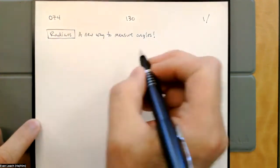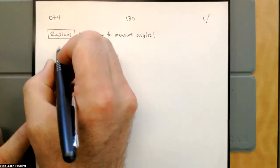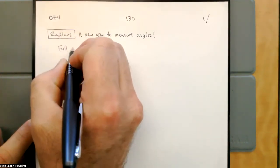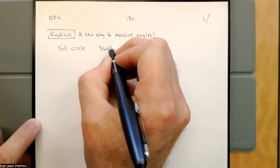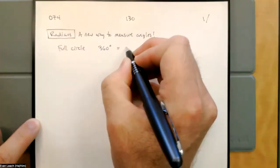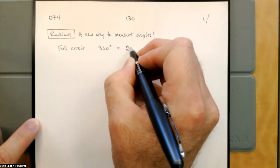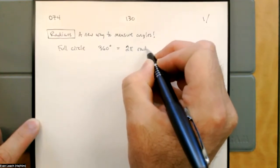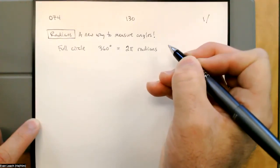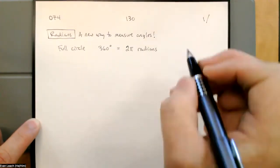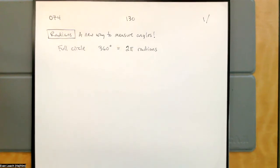One full circle is 360 degrees. One full circle is 360 degrees, and that's equal to 2 pi radians.